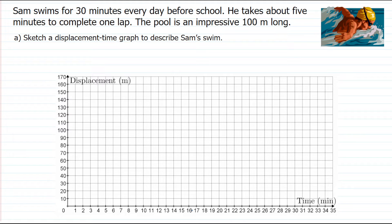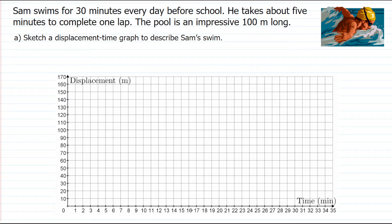Let's sketch a displacement-time graph to describe Sam's swim. He takes five minutes to complete one lap, and one lap means swimming from one end of the pool to the opposite end and back — 100 meters there and 100 meters back in five minutes. That means he swims the length of the pool in two and a half minutes. He starts at a displacement of zero, and after two and a half minutes he should have a displacement of 100 meters.